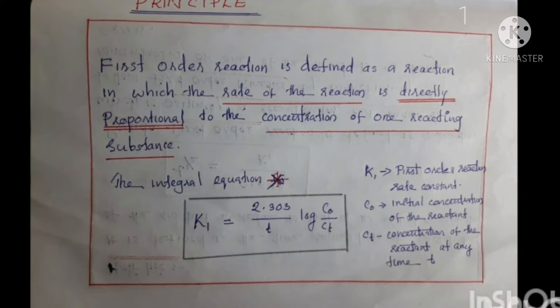First order reaction is defined as a reaction in which the rate of reaction is directly proportional to the concentration of one reacting substance. The integral equation for first order reaction is: K1 equal to 2.303 divided by T, log C0 divided by Ct. Here K1 is the first order reaction rate constant, which expresses the relationship between rate of reaction and concentration of the reacting substance.